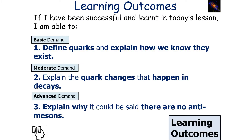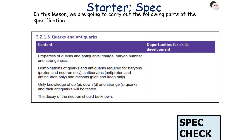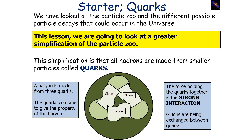If we're successful and we learn in today's lesson, we can define quarks and explain how we know they exist. We can explain the quark changes that happen in particle decays, and finally explain why it could be said that there are no anti-mesons, which is linked into the AQA A-level physics specification: quarks and anti-quarks.